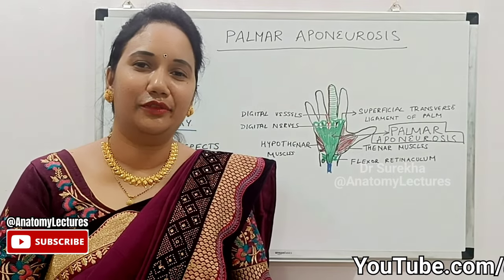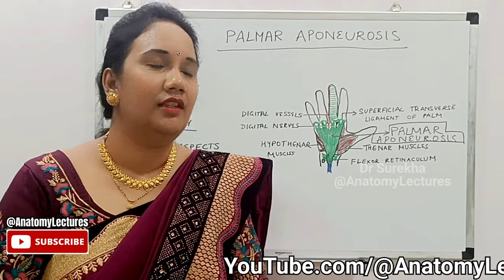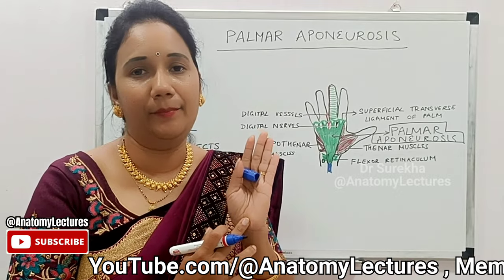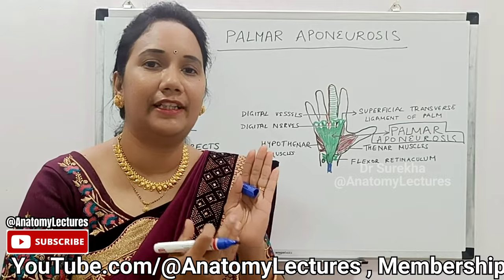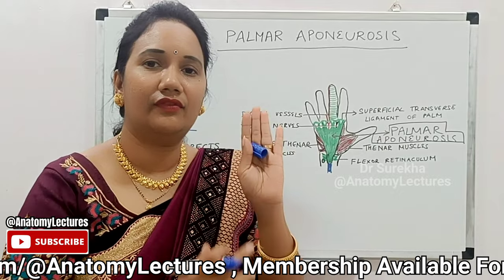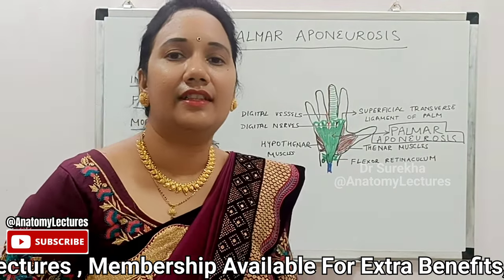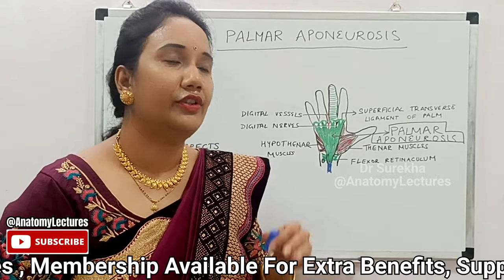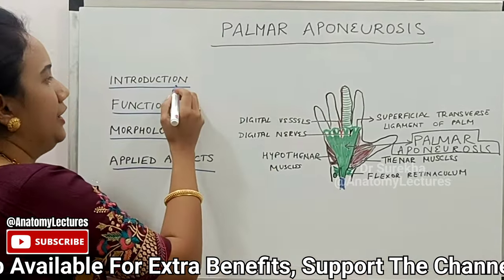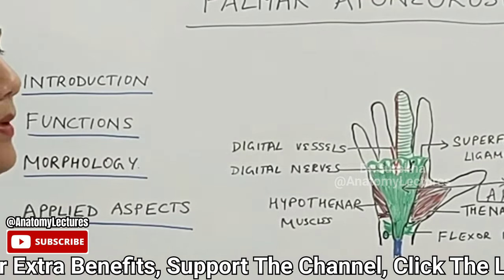Welcome back viewers. In today's video we are going to discuss in detail about the palmar aponeurosis. If you remember my last video, I told you the deep fascia of the palm is modified at places — thickened to form the flexor retinaculum, the palmar aponeurosis, and the fibrous flexor sheets of the digits. Today we are going to discuss the palmar aponeurosis under introduction, structure, functions, morphology, and applied aspects.